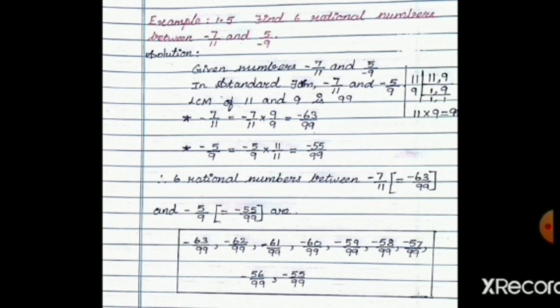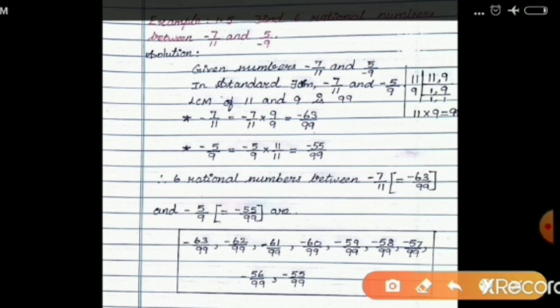Find six rational numbers between minus 7 by 11 and 5 by minus 9. The given numbers are minus 7 by 11 and 5 by minus 9. Here, 5 by minus 9 is not in standard form, so we convert it. The denominator should always be positive, so we move the minus sign to the numerator and get minus 5 by 9.